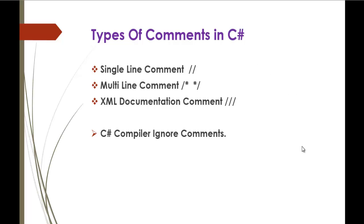Types of comments: a single-line comment starts with a double forward slash. A multiline comment starts with a forward slash and asterisk and ends with an asterisk and forward slash. An XML documentation comment starts with a triple forward slash. Keep in mind that the C# compiler ignores comments.